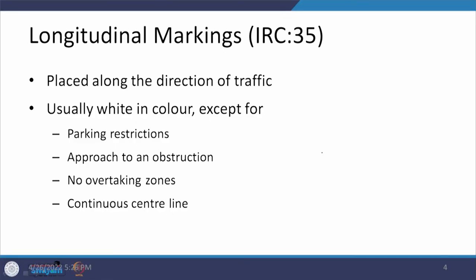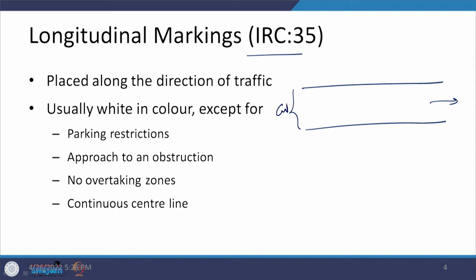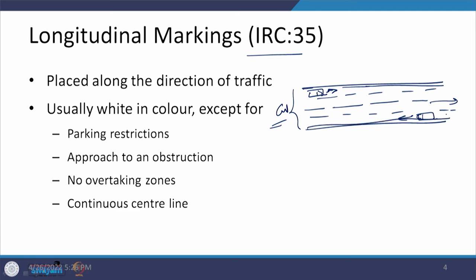When we talk about longitudinal markings, we are basically referring to IRC-35, which provides all of this information. These markings are provided in the longitudinal direction of movement. The carriageway may be quite wide, allowing more than two lanes, two lanes, or even a single lane. The markings are provided along the direction of traffic flow, and there can be different types of markings at different positions across the carriageway.